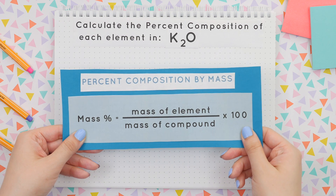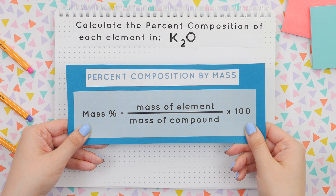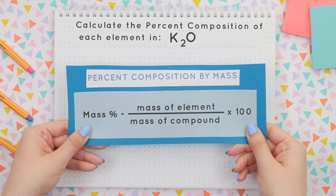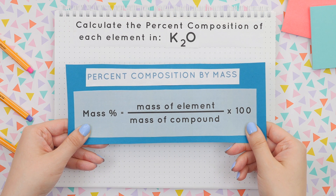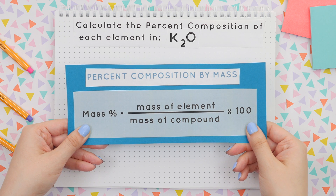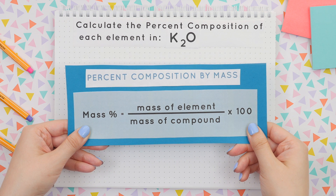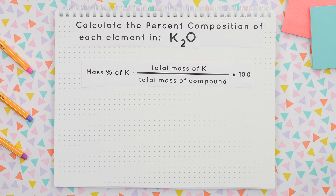Here's the general formula for percent composition by mass. On top, we have the mass of the element divided by the mass of the compound, all multiplied by 100. We will apply this formula to find the percent composition of potassium, and this is what we'll use.